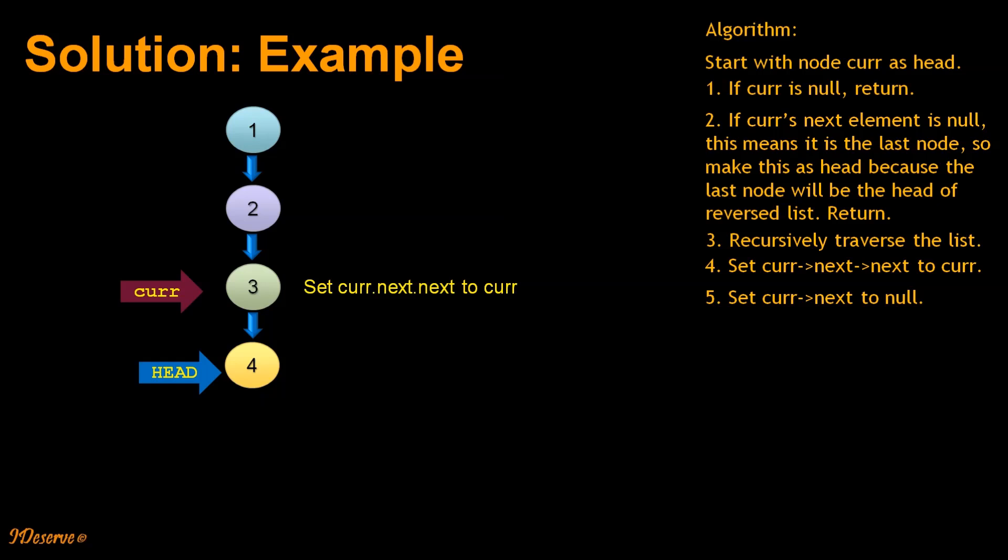Set current.next.next to current. What does it mean? We can visualize this here. See, the next node of node 3 is pointing to node 3 itself. And the next step is set current.next to null. So we can clearly see here that these two steps actually reverse the node pointers.